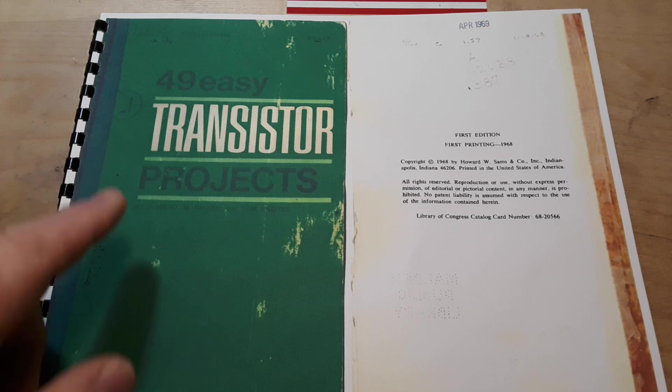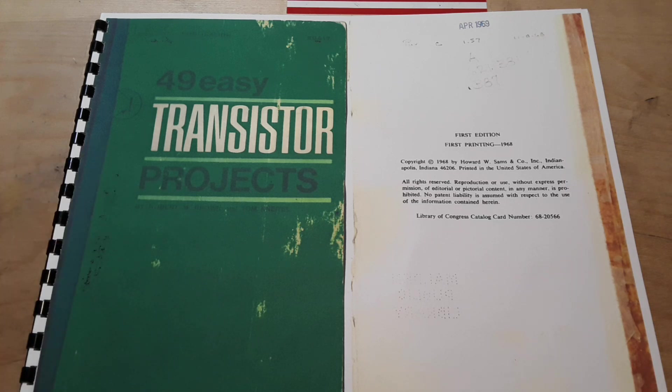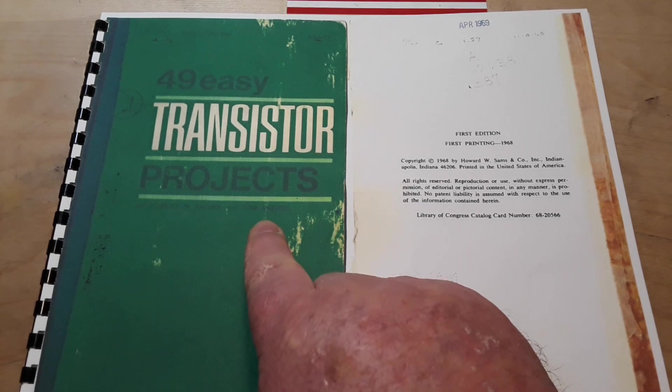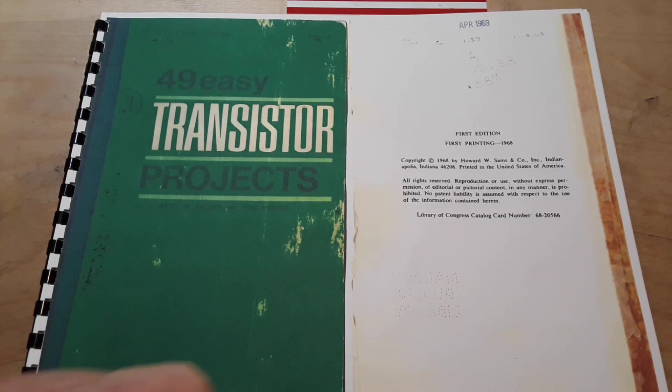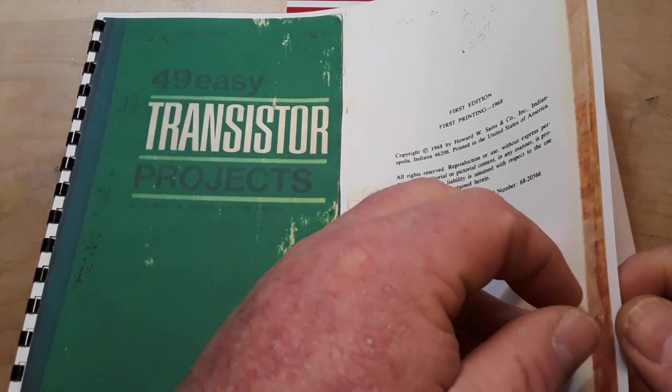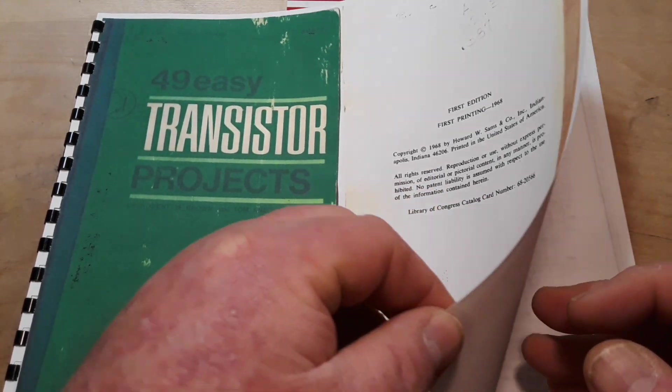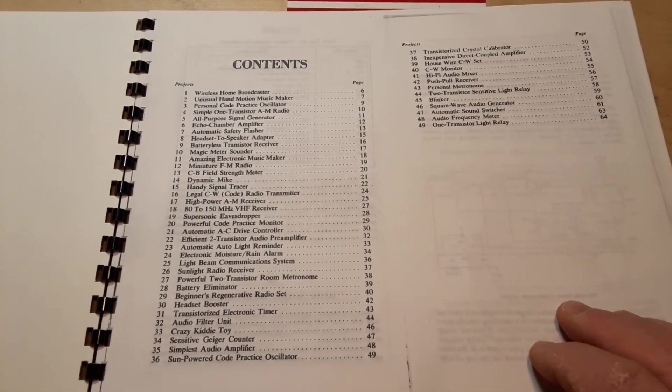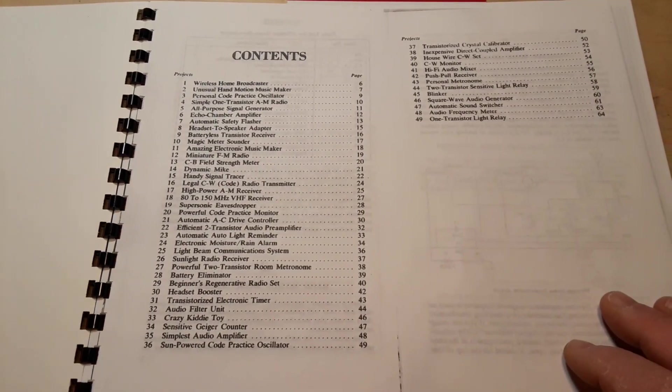It's 49 Easy Transistor Projects. Looks like it's by Robert W. Brown and Tom Canedle. These are the kind of books I liked when I was a kid, like the Forrest Mims stuff. It's still early in the morning.